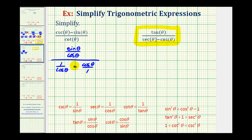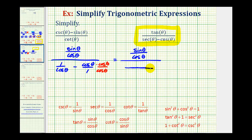Just like in the previous example, the only thing we can do is subtract these fractions by obtaining a common denominator, which now would be cosine theta. We're going to multiply by cosine theta over cosine theta. The numerator stays the same for now, and the common denominator is cosine theta. The numerator would now be one minus cosine squared theta. Notice we have a trig function squared — one minus cosine squared theta — which should lead us to the Pythagorean identity.